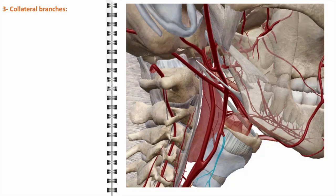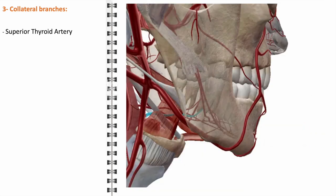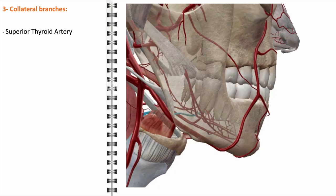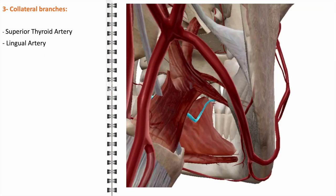Let's delve deeper into the collateral branches of the external carotid artery. The superior thyroid artery, the first branch of the external carotid artery, primarily supplies blood to the thyroid gland, larynx, and nearby muscles and skin. The lingual artery, emerging close to the superior thyroid artery, supplies blood to the tongue, floor of the mouth, and tonsils.